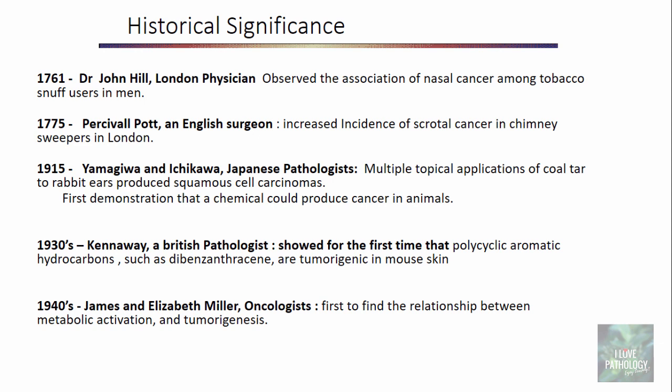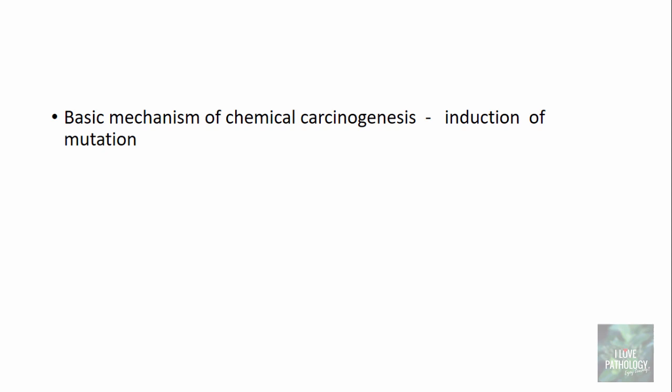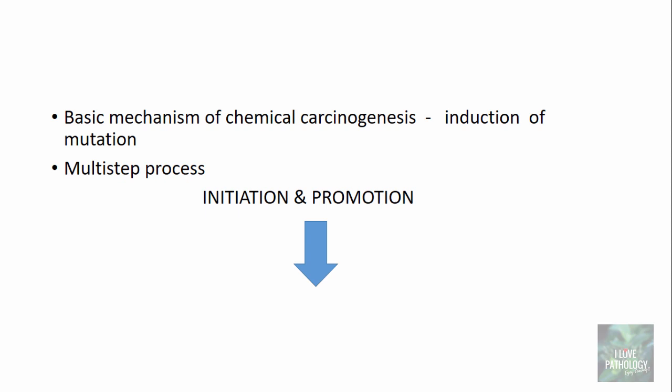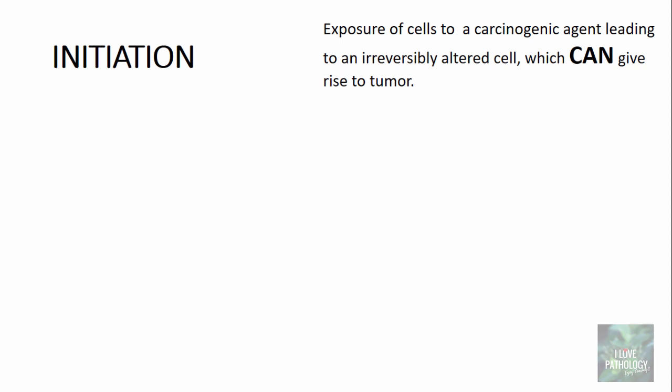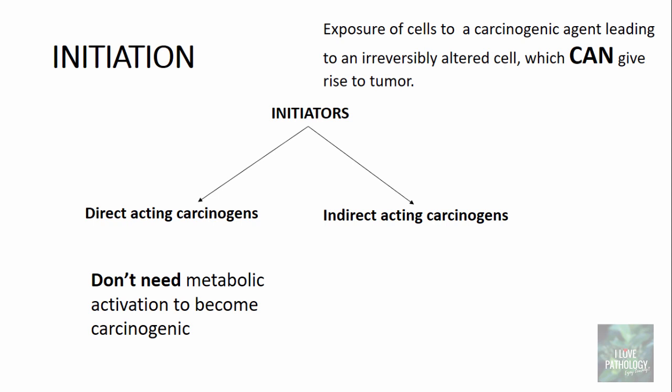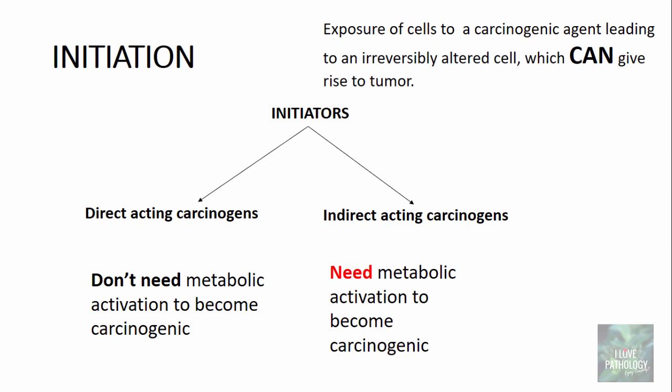The basic mechanism of chemical carcinogenesis is the induction of mutation. It is a multi-step process which involves initiation, promotion, and then progression. Initiation occurs whenever cells are exposed to a carcinogenic agent and that cell becomes an irreversibly altered cell, which can give rise to a tumor. The initiators involved can be direct acting carcinogens or indirect acting carcinogens. Direct acting carcinogens don't need any metabolic activation to become carcinogenic, whereas indirect acting carcinogens need metabolic activation.